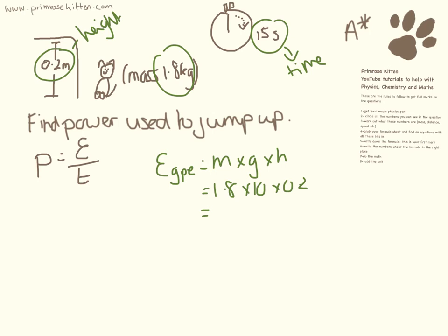So the gravitational potential energy in this situation, 1.8 times 10 times 0.2, is going to be 3.6 joules. We can then put this into the other equation. Power equals 3.6 divided by 15. And we are going to get 0.24 watts. Lots of really tricky questions there guys. If you manage to get all of them, well done.